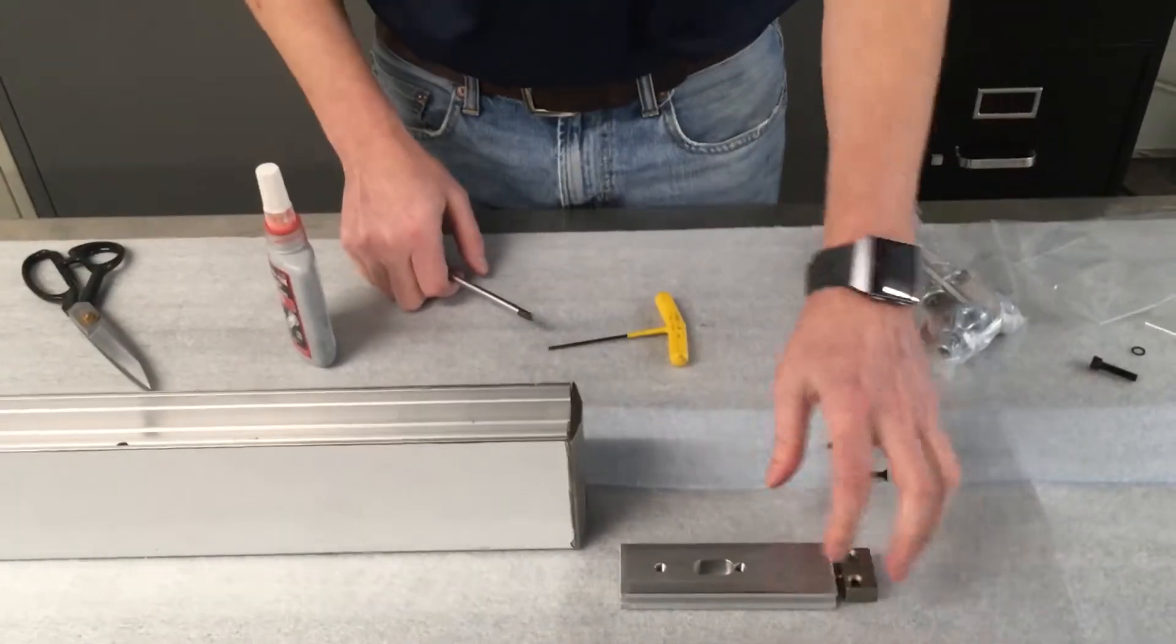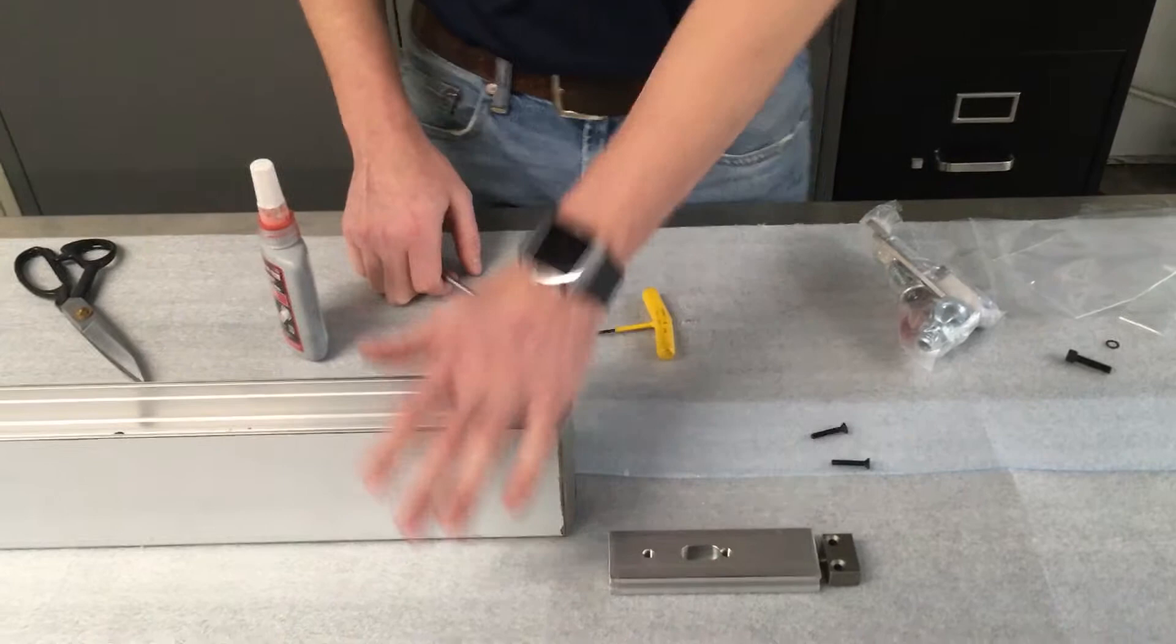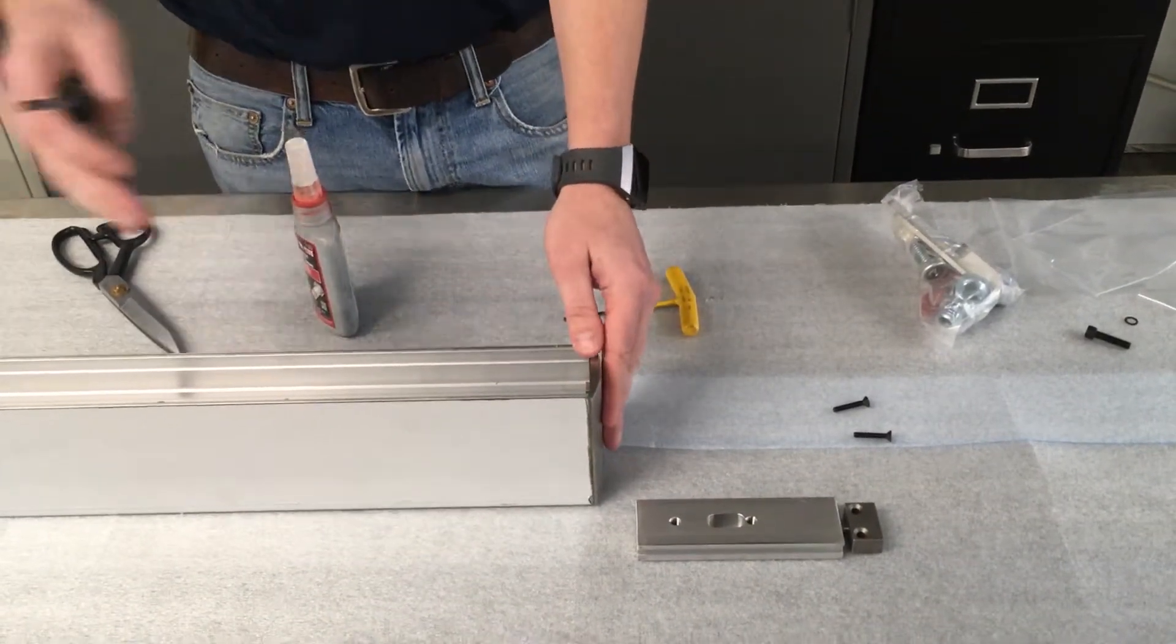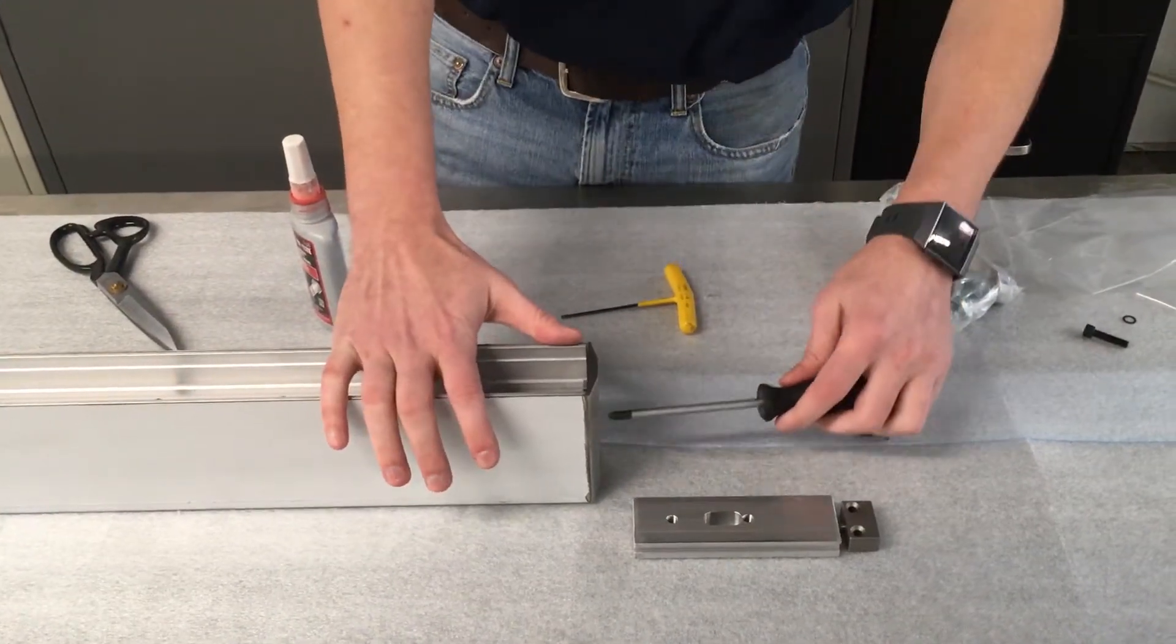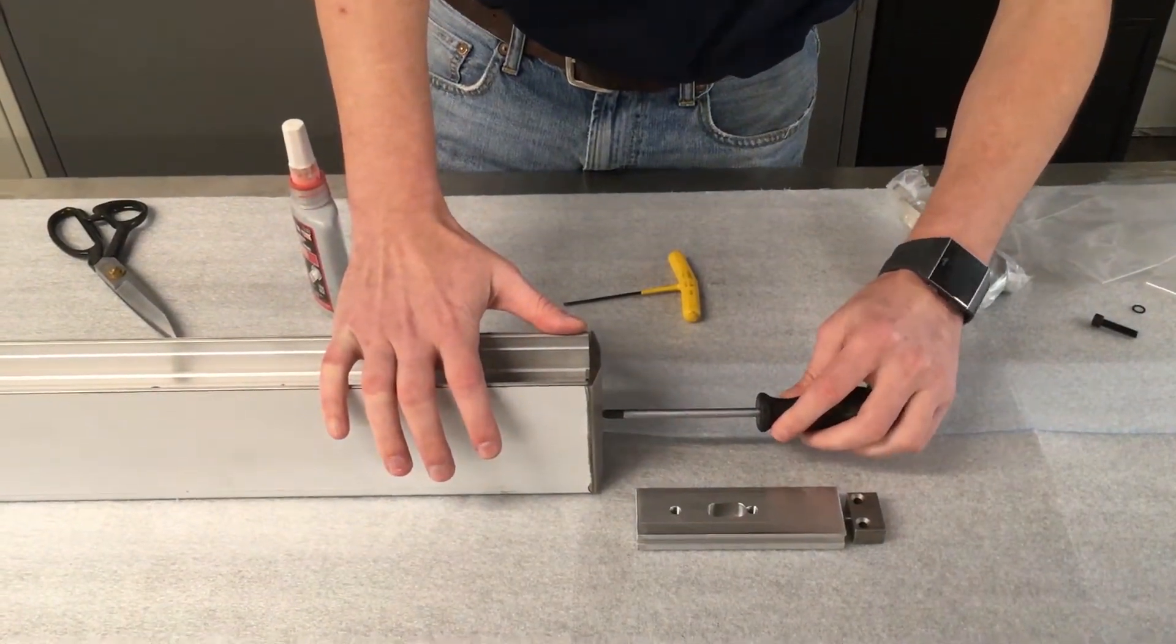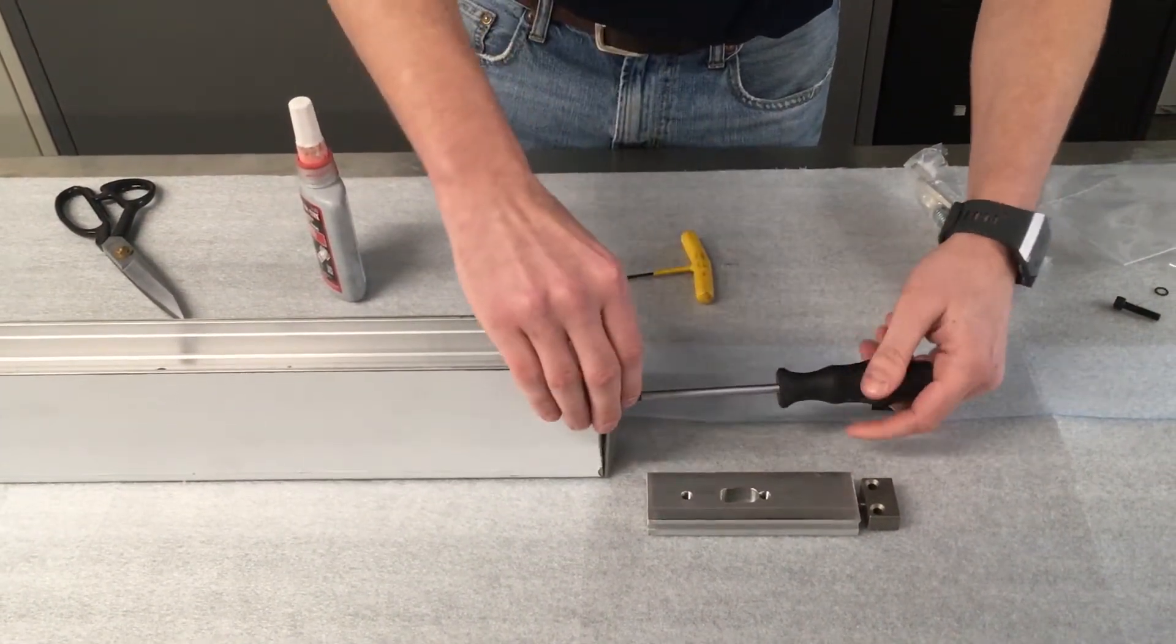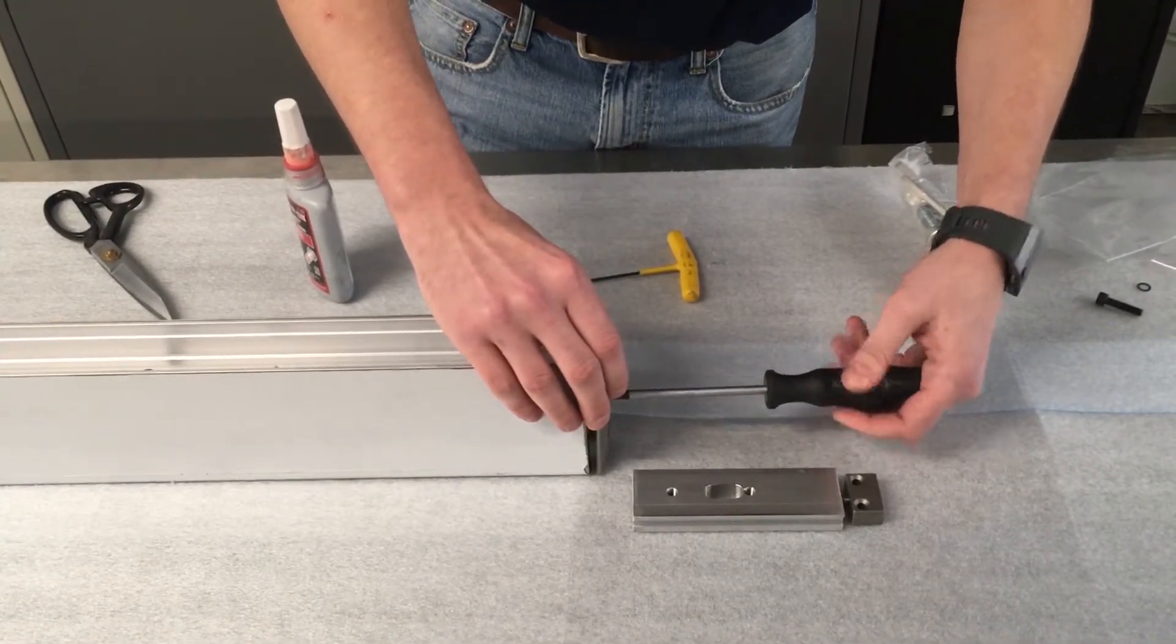Once your sub-assembly is complete, install it in the door rail. The door rail comes pre-assembled and you'll need to remove the end cap from the end where the pivot is being installed. Take a Phillips screwdriver and remove the end cap from the door rail.